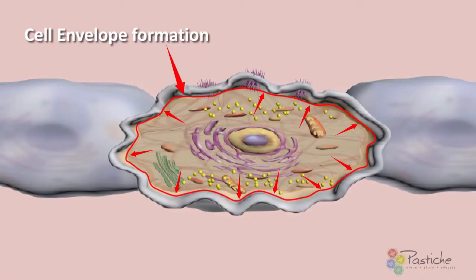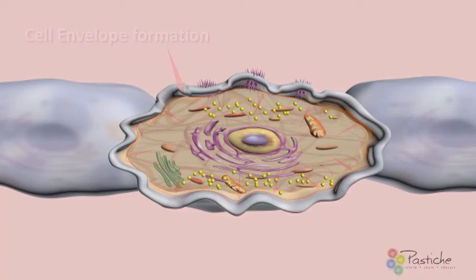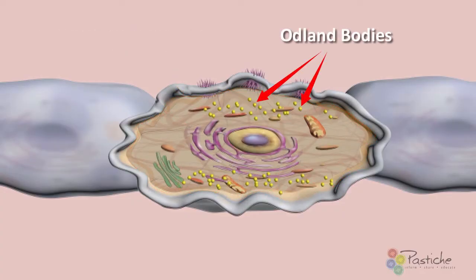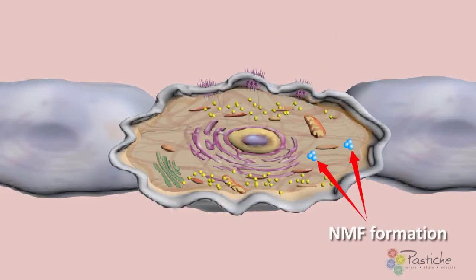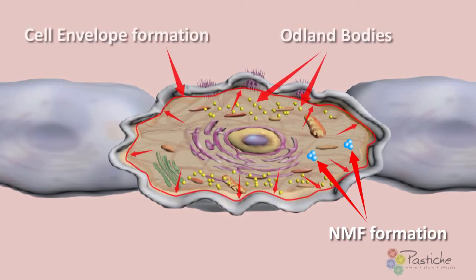The cell envelope forms a monomolecular layer along the entire inner surface of the plasma membrane, including over the desmosomes, to form a scaffold for the future deposition of an extracellular lamellar lipid structure. This process also forms the hardened shell that is part of the process that turns a keratinocyte into a corneocyte.